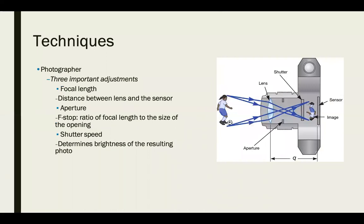For a photographer with modern cameras today, there are three important adjustments to consider. First, focal length — the distance between the lens and the sensor — determines how much focus the image will have. If you've played with a DSLR camera with an adjustable lens, you can see how going in and out affects focus. Second, the aperture or f-stop is the ratio of the focal length to the size of the opening.